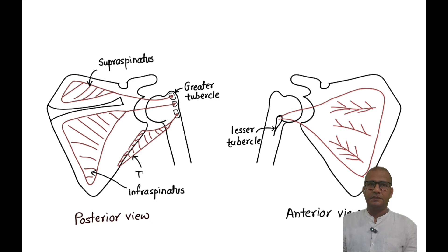These muscles — supraspinatus, infraspinatus, teres minor, and subscapularis — form the rotator cuff, also known as the musculotendinous cuff of the shoulder joint. This rotator cuff supports the shoulder joint all over except inferiorly.